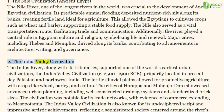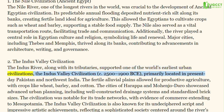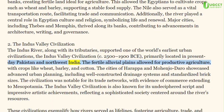2. The Indus Valley Civilization. The Indus River, along with its tributaries, supported one of the world's earliest urban civilizations, the Indus Valley Civilization (c. 2100–1900 BCE), primarily located in present-day Pakistan and northwest India.